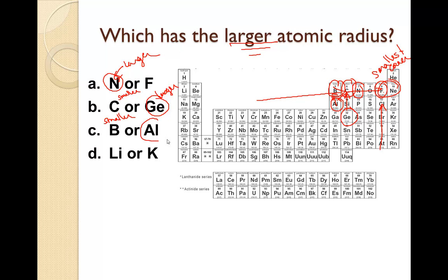And then finally lithium and potassium. Lithium is further up, so that means lithium is going to be smaller while potassium is larger. And this explains the effect of nuclear charge and that relationship to the trend of atomic radius.